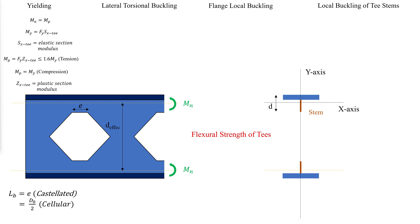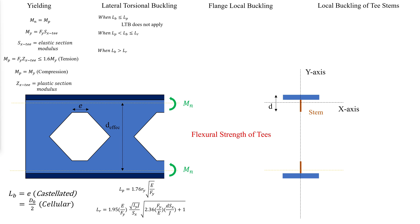For lateral torsional buckling checks, the first step is to calculate the bracing length limits LP and LR and compare to the unbraced length. If the unbraced length is less than or equal to LP, lateral torsional buckling does not apply. If the unbraced length is between LP and LR, the strength is linearly interpolated between MP and MY. If the unbraced length is greater than LR, it is calculated as follows.